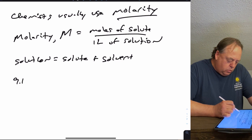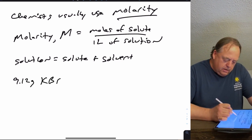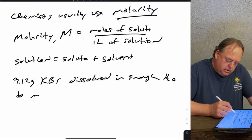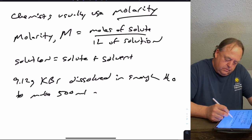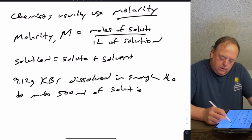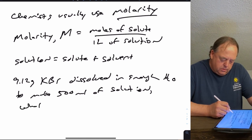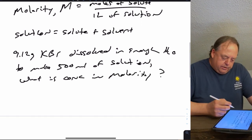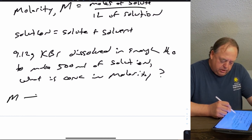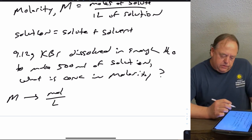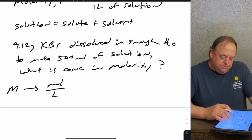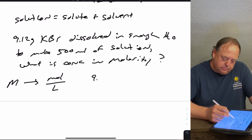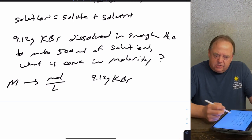Here's an example: if you take 9.12 grams of potassium bromide dissolved in enough H₂O to make 500 mL of solution, what's the concentration in molarity? Whenever you see molarity or capital M, you should immediately think moles per liter — that unit helps you set up dimensional analysis.